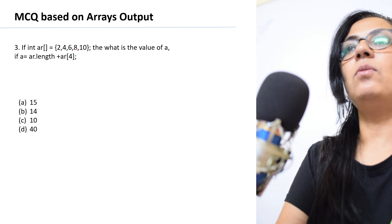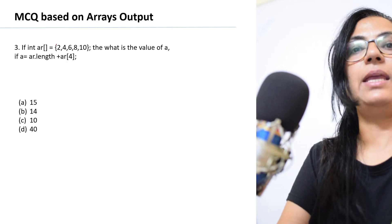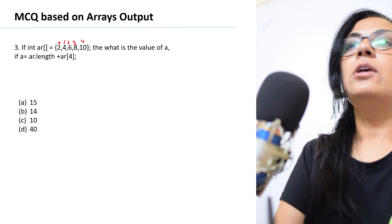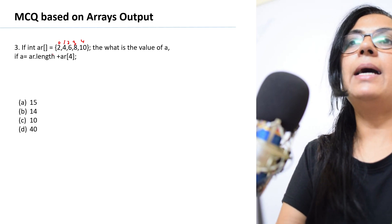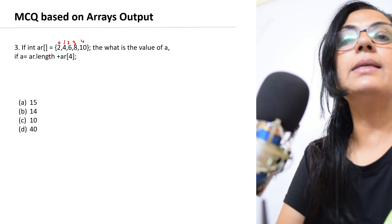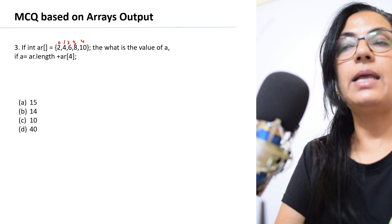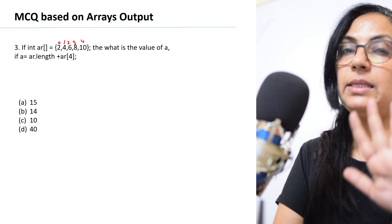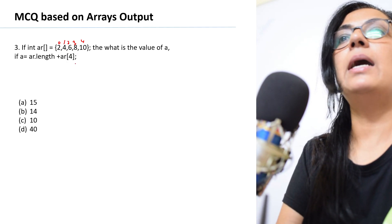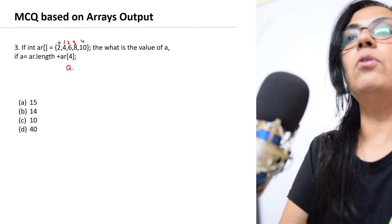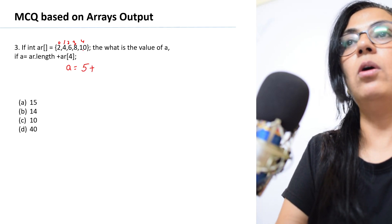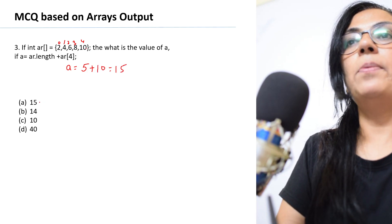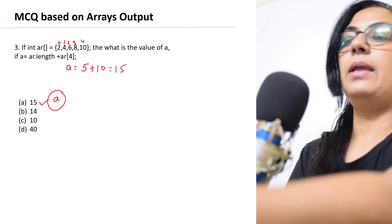Question 3: int ar[] = {2, 4, 6, 8, 10}. What is the value of a = ar.length + a[4]? Always mark the index numbers in array portions. Index numbers are 0 to 4. The length function gives the size of the array — length is 5, not the last index. ar.length = 5, a[4] = 10, so 5 + 10 = 15. Option A is the correct answer.